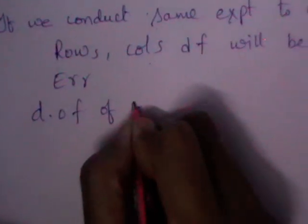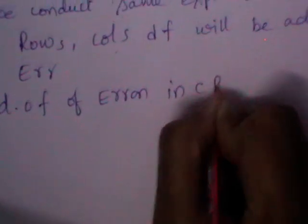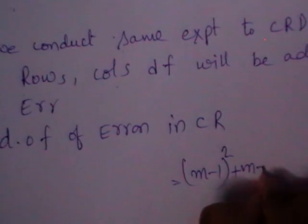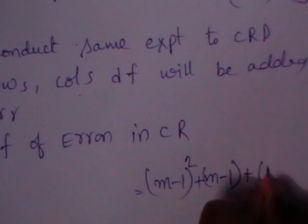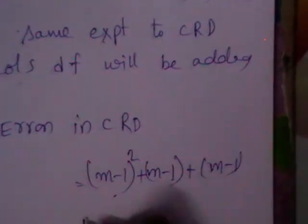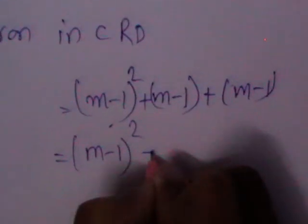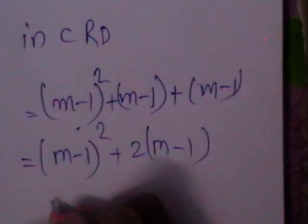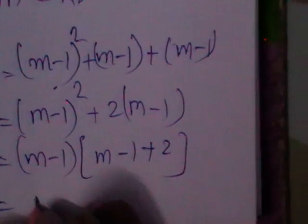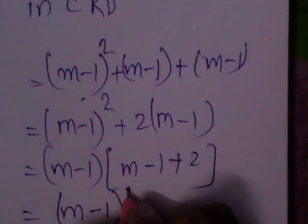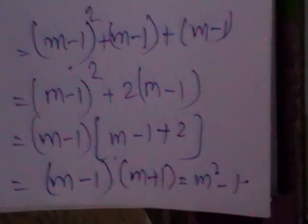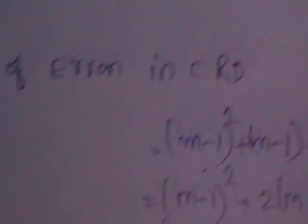The existing error degrees of freedom is (M-1)². We add both rows degrees of freedom (M-1) and columns degrees of freedom (M-1), giving (M-1)² + 2(M-1). Taking (M-1) as common, this becomes (M-1)(M-1+2) = (M-1)(M+1) = M² - 1. So the error degrees of freedom in CRD is M² - 1.